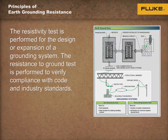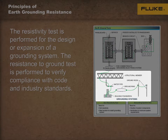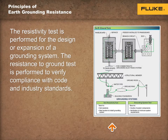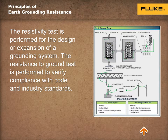The resistance to ground test is the actual testing of the grounding system components, such as the rod, the plate, the ring, etc., to verify and document that the selected grounding method and installation meets all minimum resistance requirements in ohms as required by the code and industry standards.